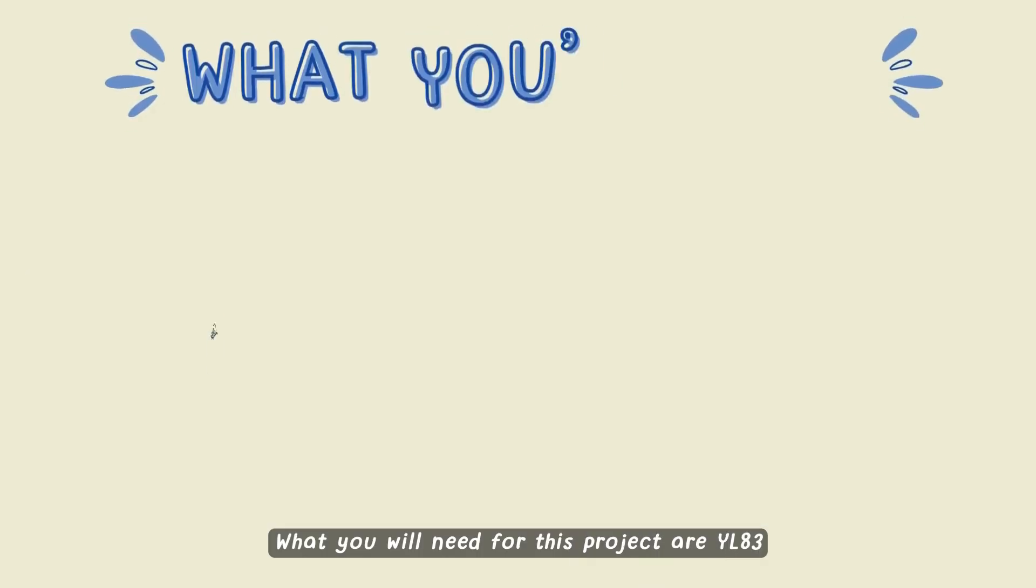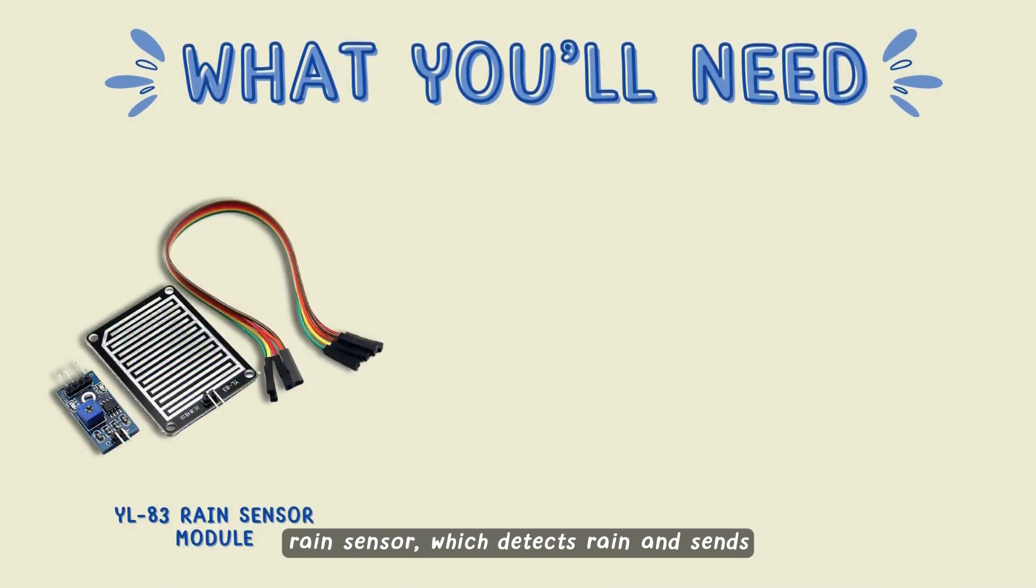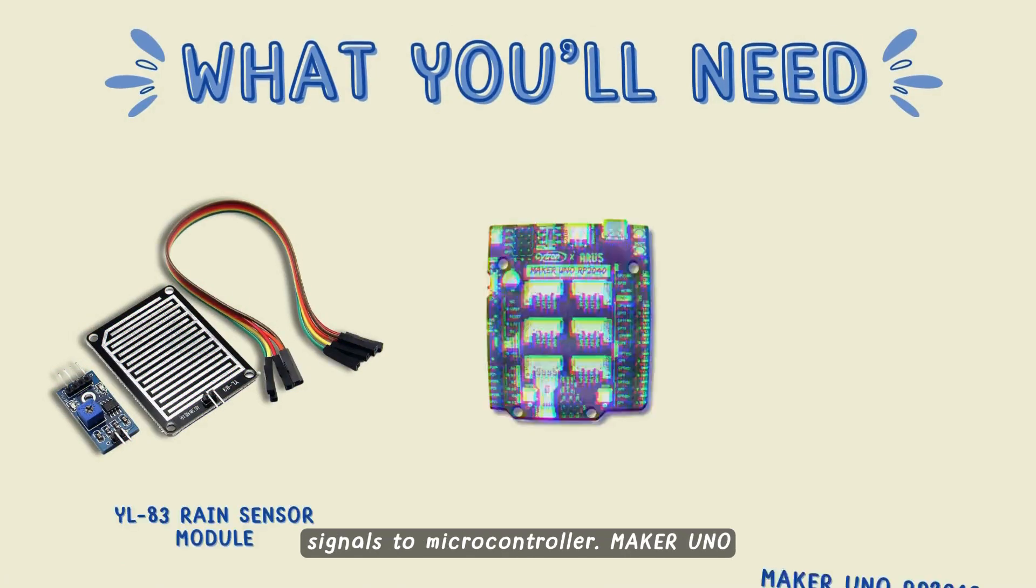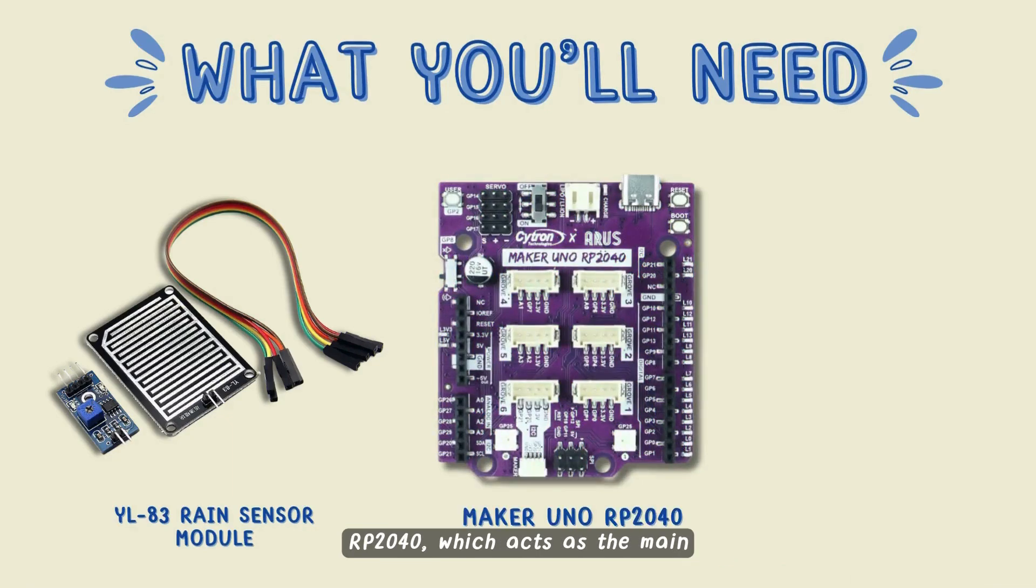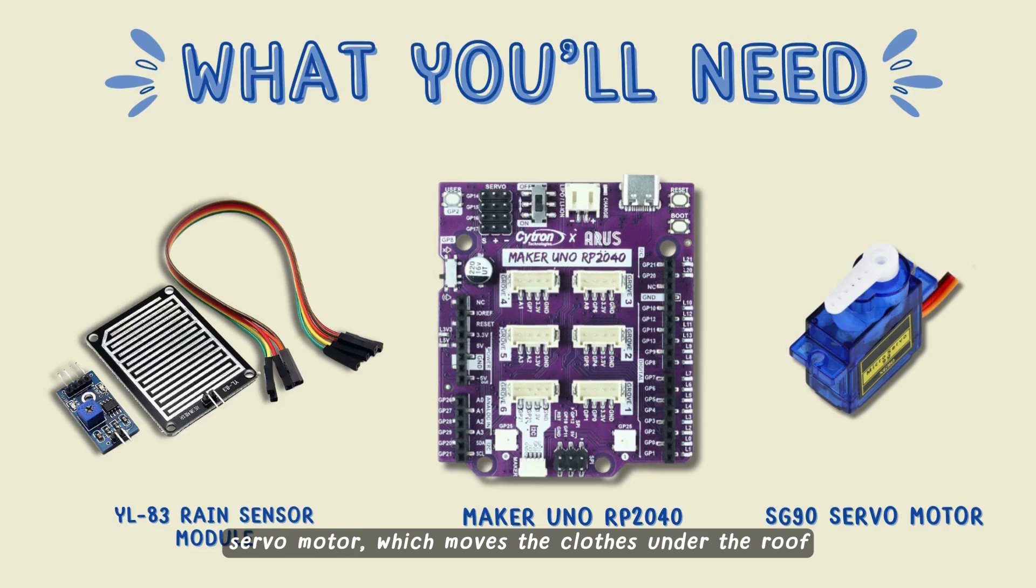What you will need for this project are YL83 Rain Sensor, which detects rain and sends signals to the microcontroller. Maker UNO RP2040, which acts as the main controller to run the system. SG90 servo motor, which moves the clothes under the roof when rain is detected.